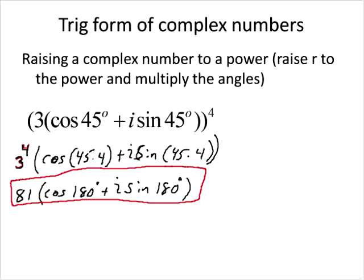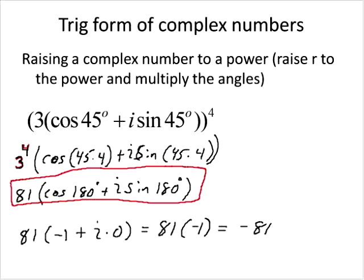If we want to write that in complex number form, we take it a step further. We have 81 times cosine of 180 degrees — but cosine of 180 degrees is negative 1. And the sine of 180 degrees is 0. So we get 81 times negative 1 plus i times 0, which is just negative 81. That's the answer they're looking for in the homework: negative 81. The formulas are very complex, so remember how to work through them in plain English — it will be easier than trying to memorize the formula.